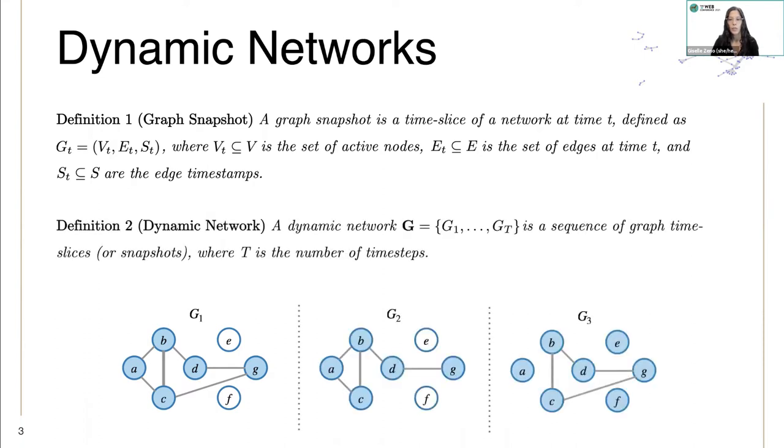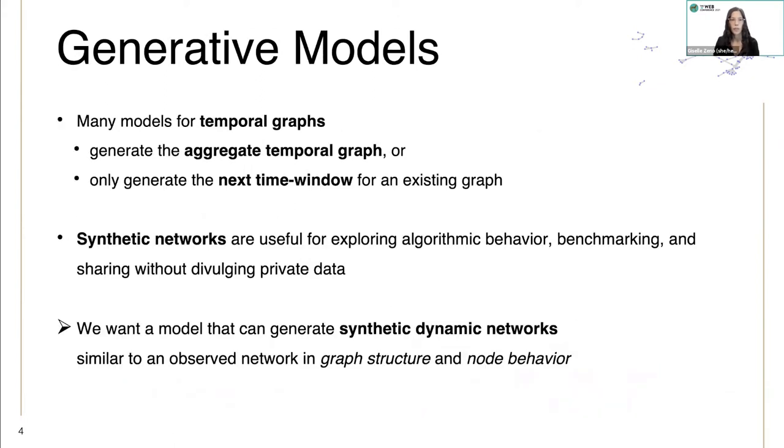A dynamic network is a sequence of graph snapshots. Many models for temporal graphs generate the aggregate temporal graph or only generate the next time window for an existing graph. But synthetic networks are useful for exploring algorithmic behavior, benchmarking models, or sharing without divulging private data.